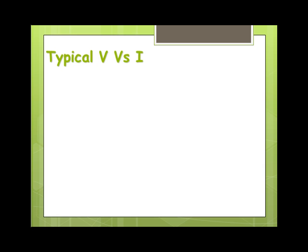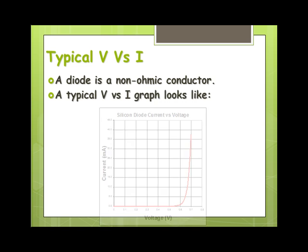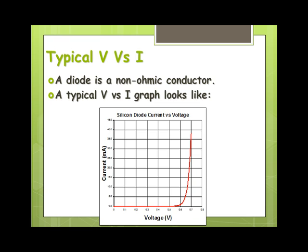So typical voltage versus current graph. Now these are not ohmic conductors, far from it. So typical graph would look something like this. So until we get this minimum voltage that's required, no current is going to flow.